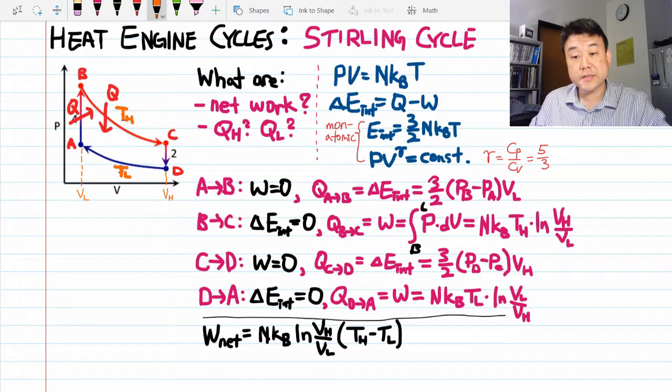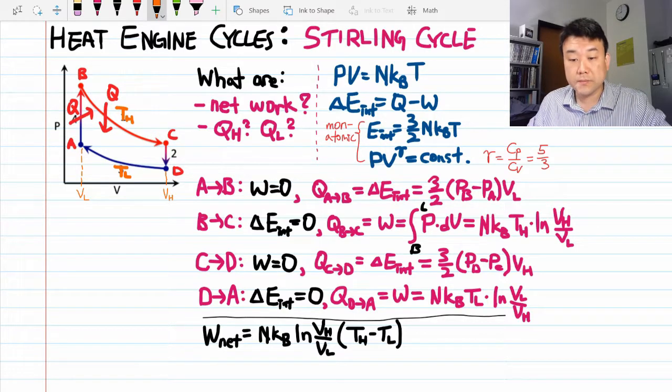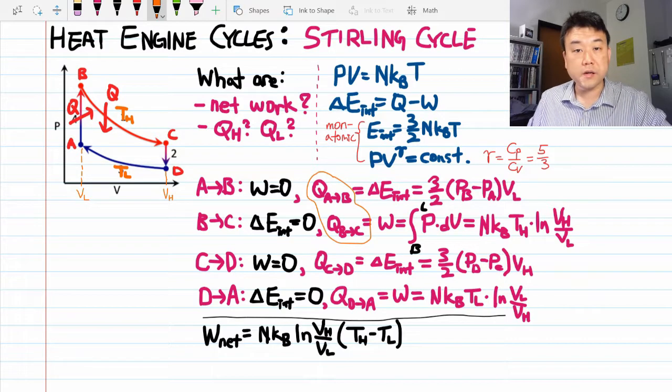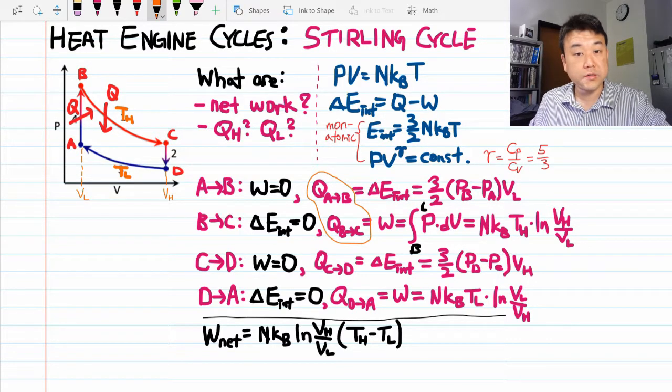Now this is not the Carnot cycle. And the difference mainly comes in the amount of heat transferred. For the Carnot cycle, for the adiabatic processes, there was zero heat transferred. But for isochoric process, there is heat transferred.